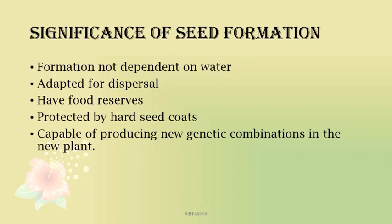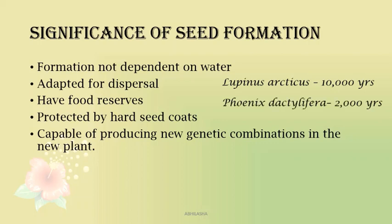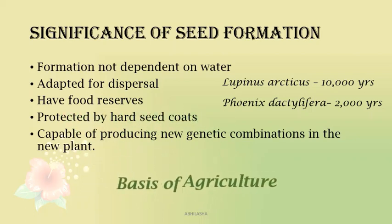Seeds can remain viable for longer periods — some for a few months, some for hundreds of years. An extreme example is Lupinus arcticus, found in the Arctic, which was known to germinate after 10,000 years of dormancy. A 2,000-year-old seed of date palm, Phoenix dactylifera, was found near the Dead Sea and it germinated. Seeds are also important for us because they are the basis of our agriculture.